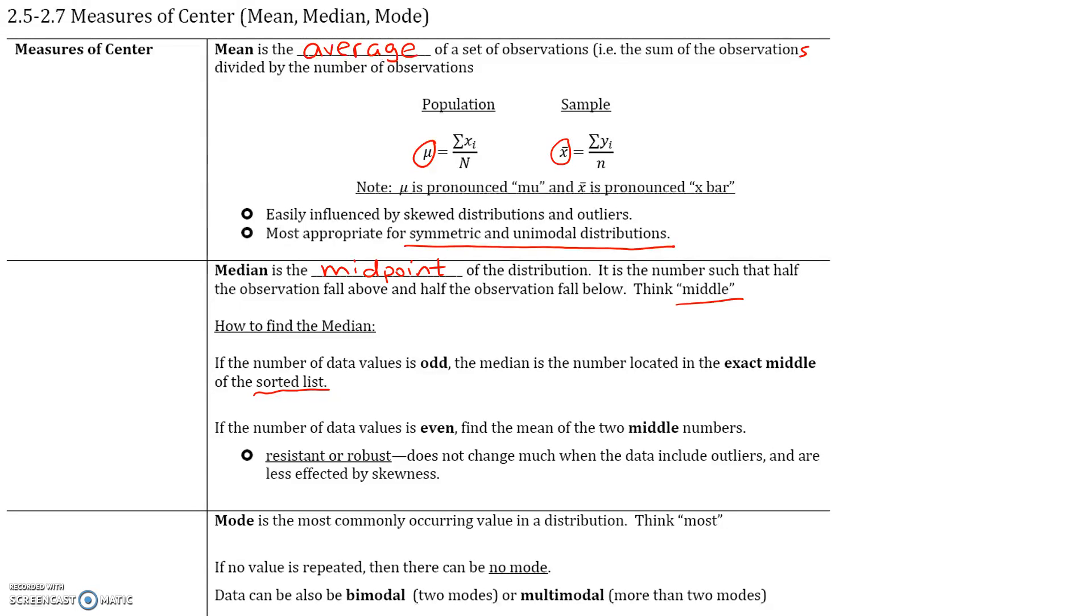If the number of data values is even, then the median is the mean of the two middle numbers. The benefits of a median: it's resistant or robust. It does not change much when data include outliers and is less affected by skewness. So if your data is skewed, then a median is a better measure of center than the mean.